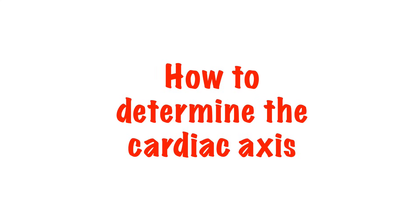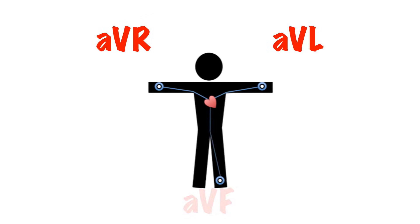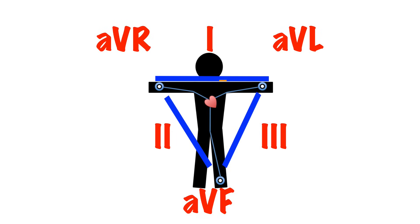How do we determine the axis? The 3 limb leads will give us a view from the right (AVR), the left (AVL), and the foot (AVF). But there are 3 further limb leads on a 12-lead ECG. You may have heard of Einthoven's triangle — its details are beyond the scope of this talk, but essentially you can create 3 further virtual leads: Lead 1 by combining AVR and AVL, Lead 2 by combining AVR and AVF, and Lead 3 by combining AVL and AVF.